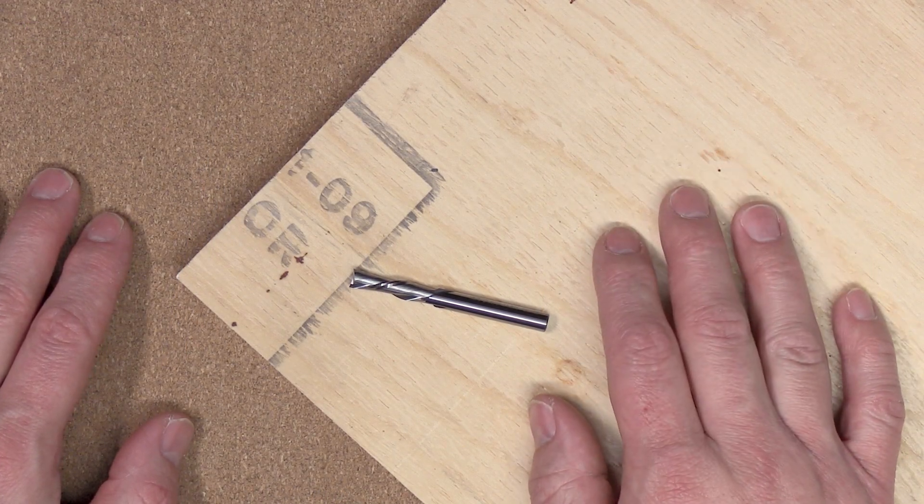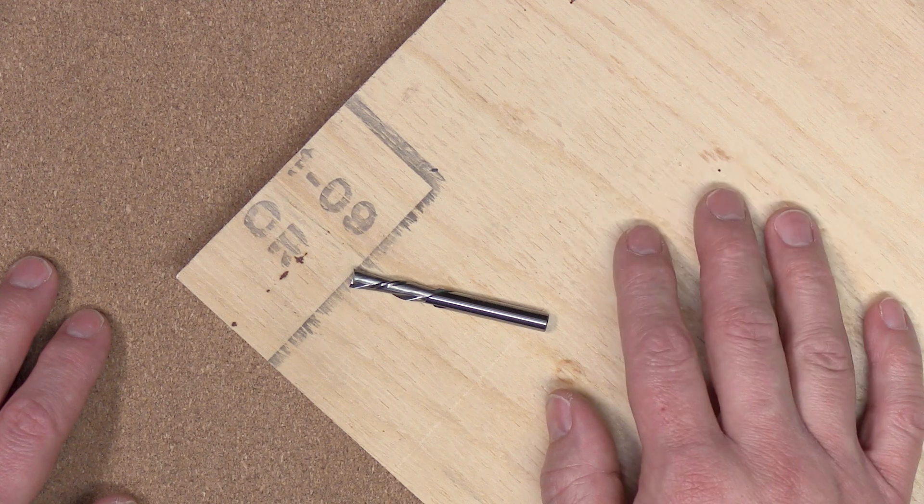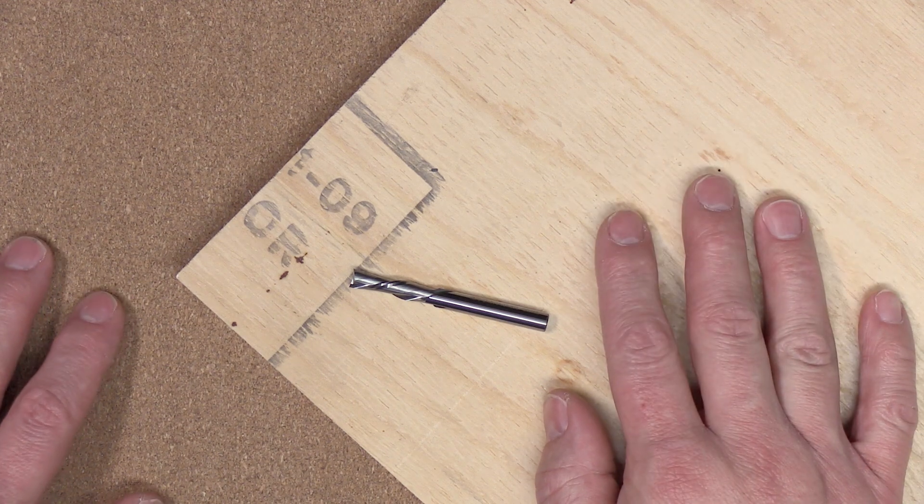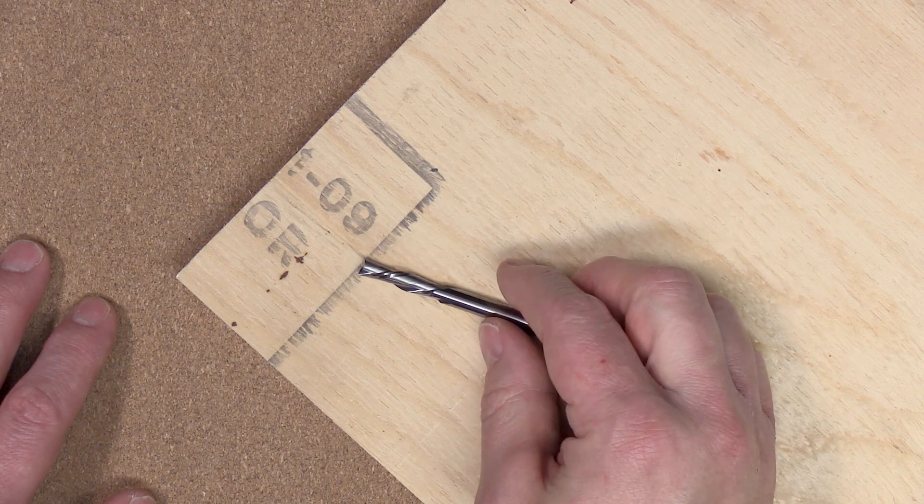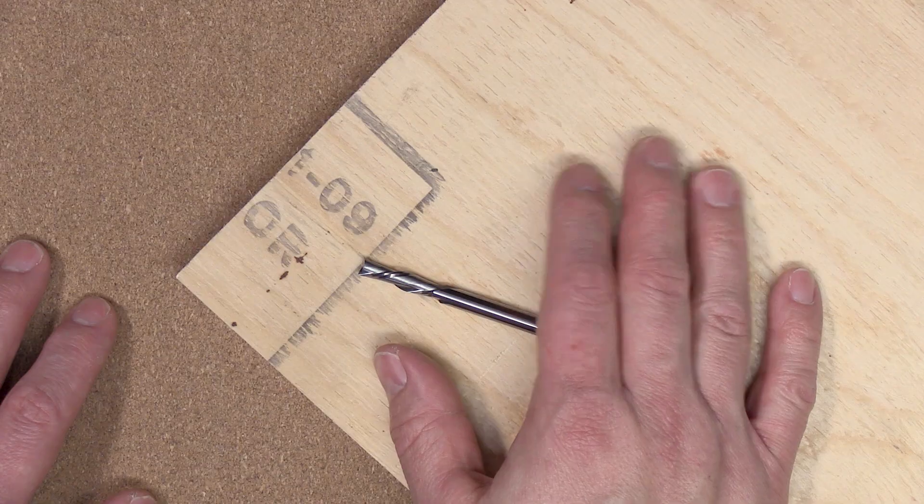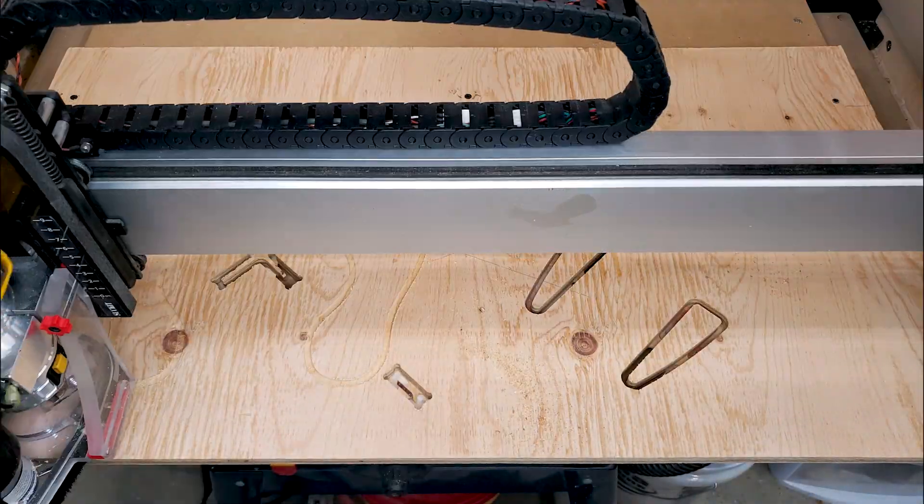For my projects I'll be using some five eighths construction grade plywood. I'm using this simply because I already had it on hand so it seemed like a good way to use some of it up. To cut this project out I'll be using a two flute down cut end mill that is made by Freud. Now that I have everything set up I'm going to go ahead and cut this project out.